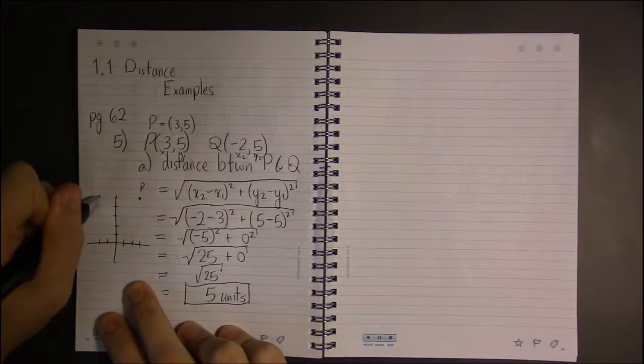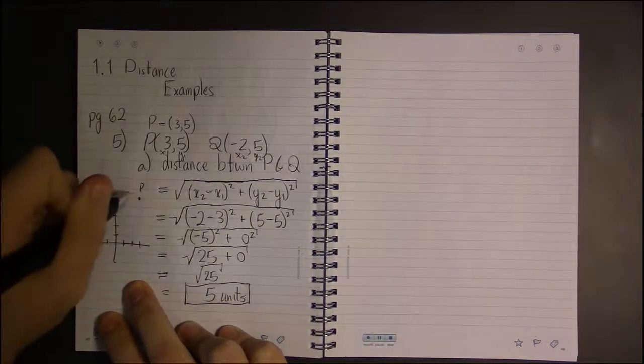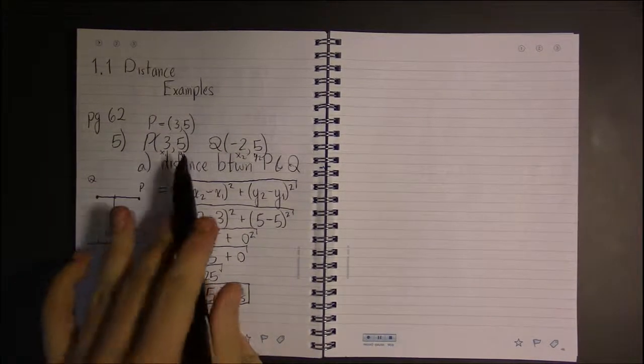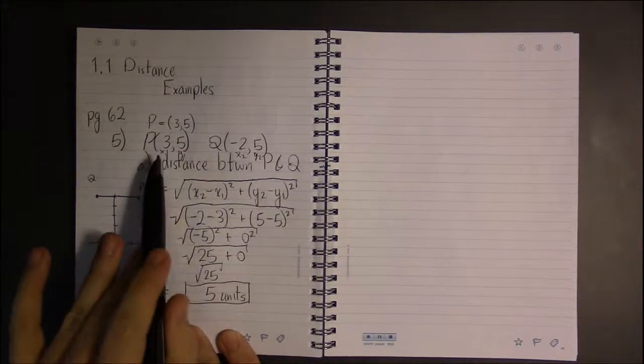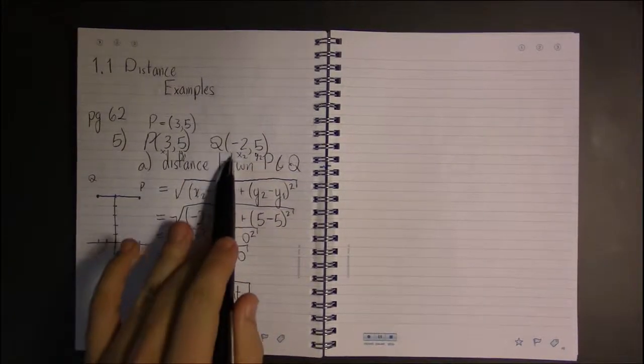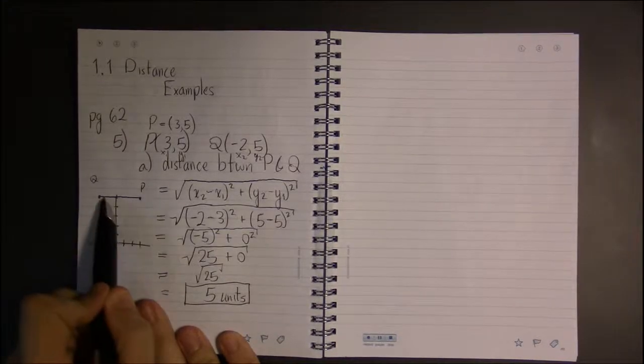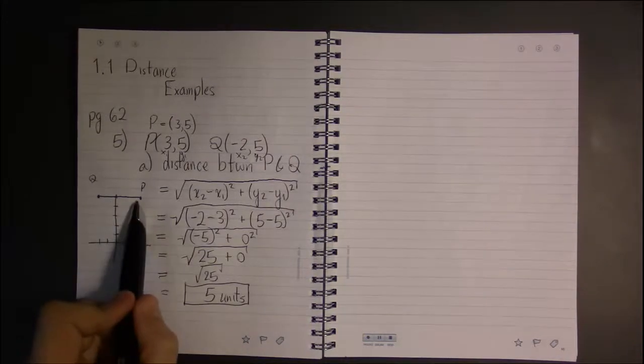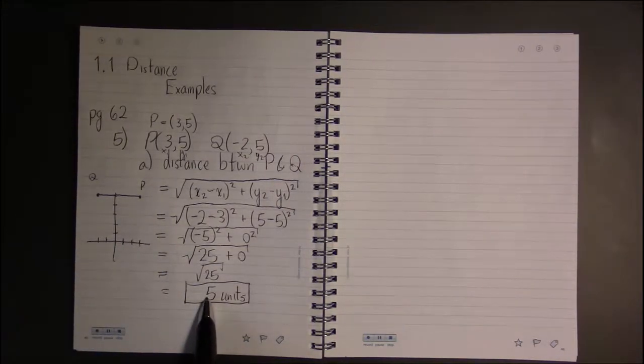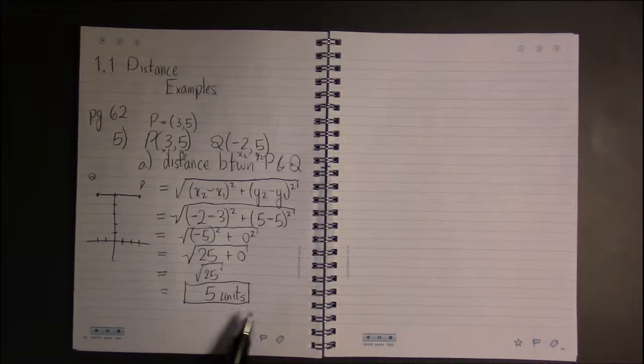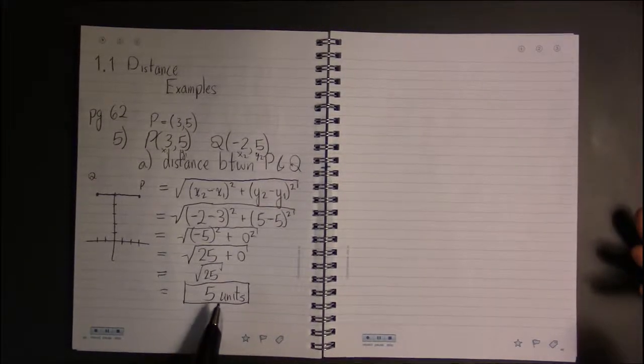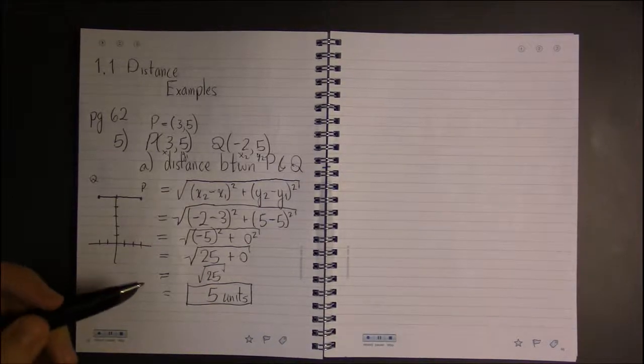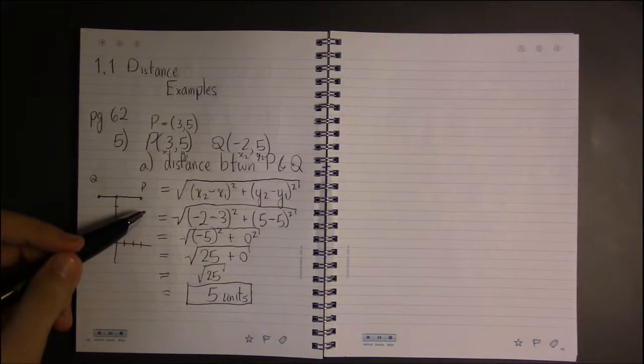And five up. P and Q lie on a horizontal line. You don't have to go up or down any to travel from P to Q. All you do is just travel left or right, and you have to travel five units left or right to get from one to the other. Good, our intuition matches the formula.